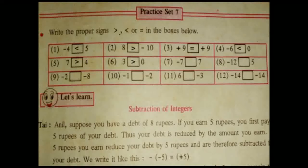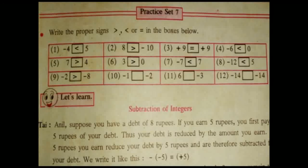Next: minus 7 and 7. Correct answer is the smaller number sign, because negative number is always smaller than positive numbers. Next: minus 12 and 5. Minus 12 is smaller than 5, because negative number is always smaller than positive numbers. Next: minus 2 and minus 8. Correct answer is the greater sign — minus 2 is greater than minus 8, because the negative smallest number is greater than the negative biggest number according to the number line.